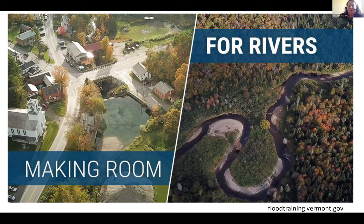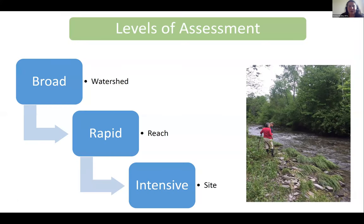The take-home here is we've got to make room for rivers to really do what they do so well and do the things we need them to do. It's not easy and it's complicated — our rivers are often pinched in between other things that are very important to us: buildings, roads, and bridges. Today we're talking about the Riparian Opportunity Assessment and thinking about planning protection and restoration of riparian systems. You can think about doing that at a couple of different scales — spatial scales, but also intensity of effort scales — looking broadly at a watershed scale, and then more rapid or intensive reach or site-level approaches.